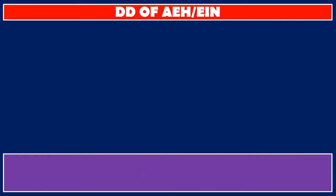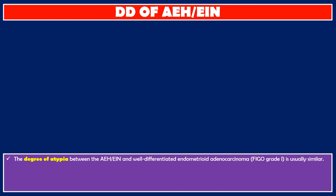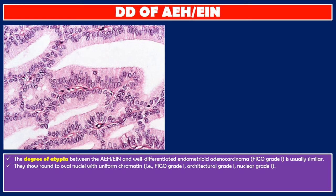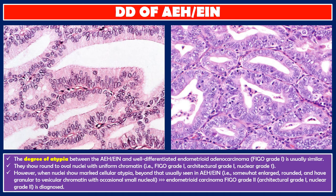The degree of atypia between atypical endometrial hyperplasia, endometrioid intraepithelial neoplasia, and well-differentiated endometrioid adenocarcinoma is usually similar — showing round to oval nuclei with uniform chromatin, FIGO Grade 1, architectural grade 1, nuclear grade 1. However, when nuclei show marked cellular atypia beyond that usually seen in atypical endometrial hyperplasia — that is, somewhat enlarged, rounded, and having granular to vesicular chromatin with occasional small nucleoli — endometrioid carcinoma FIGO Grade 1, architectural grade 1, nuclear grade 2, is diagnosed.